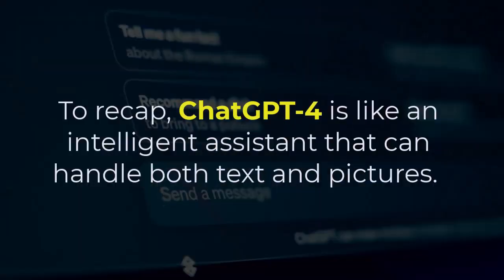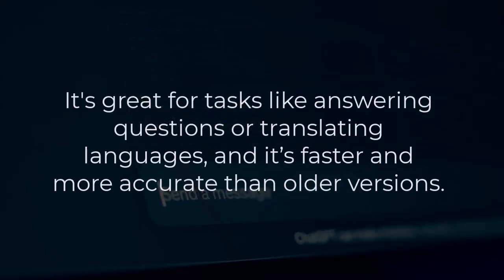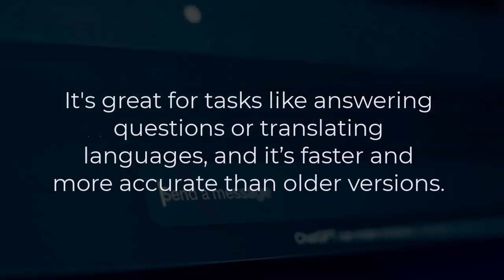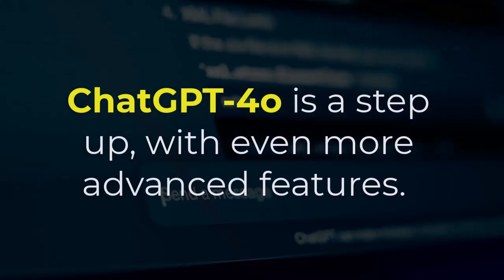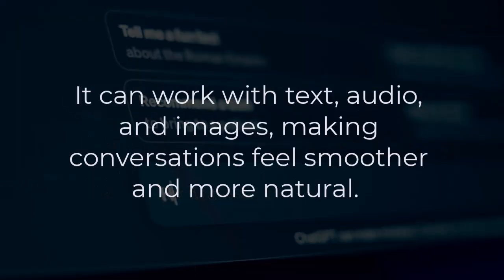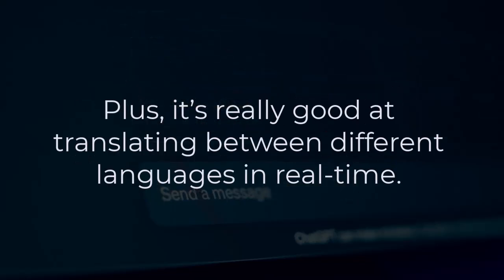To recap, ChatGPT 4.0 is like an intelligent assistant that can handle both text and pictures. It's great for tasks like answering questions or translating languages, and it's faster and more accurate than older versions. ChatGPT 4.0 is a step up with even more advanced features — it can work with text, audio, and images, making conversations feel smoother and more natural. Plus, it's really good at translating between different languages in real-time.